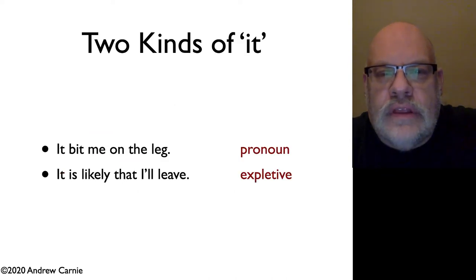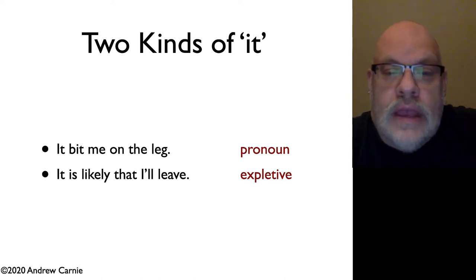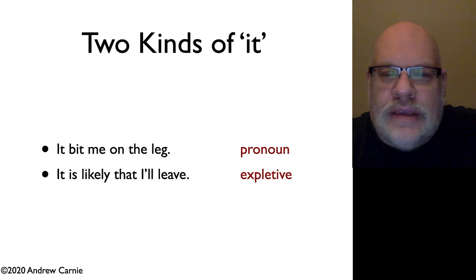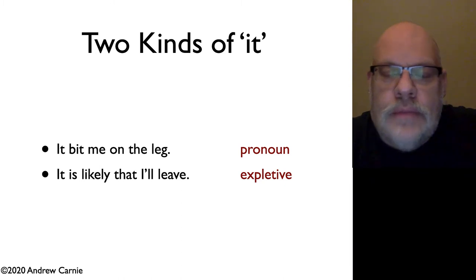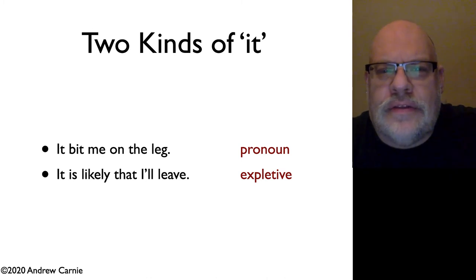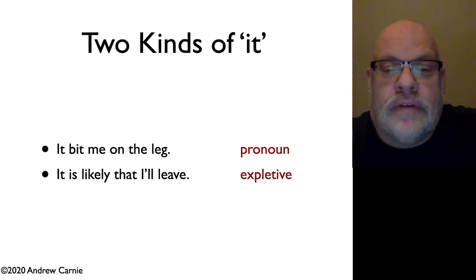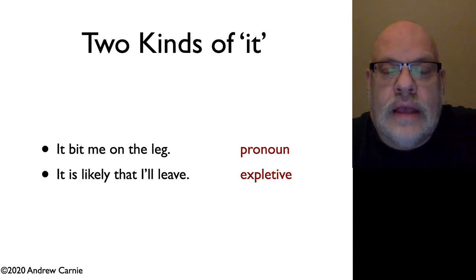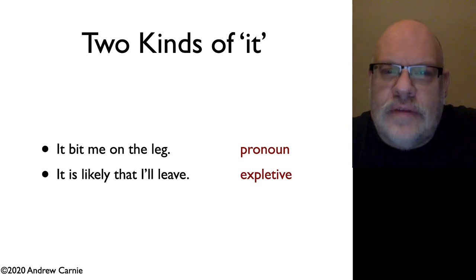Notice that there are really two different kinds of "it" pronoun in English. There's one which is a real pronoun — "it bit me on the leg" — where "it" refers to some animate thing acting as an agent of "bit"; that "it" gets a theta role. But think about "it is likely that I'll leave" — what is likely that you'll leave? There's no theta role associated with that "it." The only thing that appears to have a theta role is "that I'll leave" — that's the only thing required by "is likely." Nonetheless, we have to have this expletive pronoun, and it's a bit of a mystery because it doesn't appear to have a theta role.